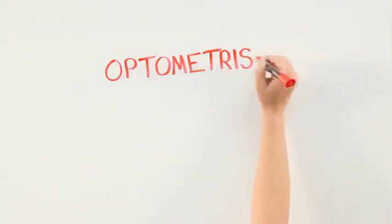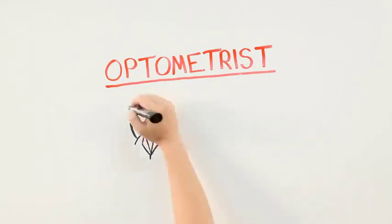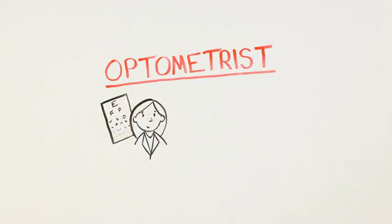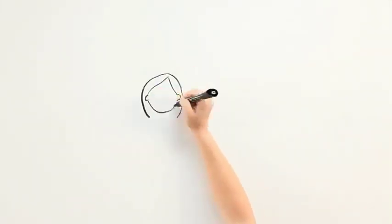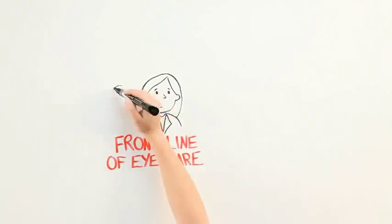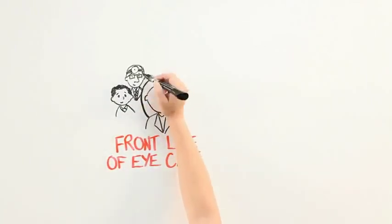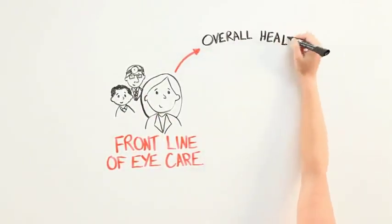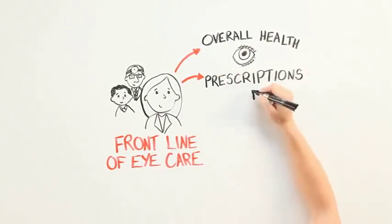The second O of eyes is the optometrist. Visiting your optometrist is often the first step if you have blurred vision or you think there is something wrong with your eyes. Optometrists are often in the front line of eye care in the medical system.